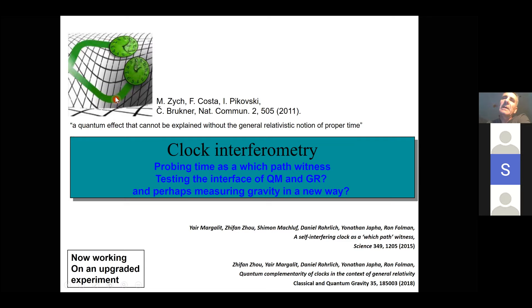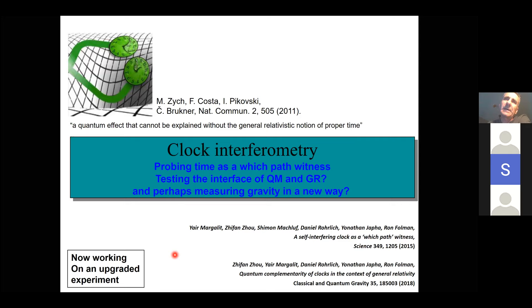In our proof-of-principle experiment, we were not sensitive enough with our clocks to really feel Earth's redshift, which is pretty small. So we used what we call a synthetic redshift — a physical simulation of the redshift — and saw the same effect. The last paper came out two years ago, but we're now working on an upgraded experiment closing loopholes from the previous one. For example, we'll use states that are non-magnetically sensitive — real clock states, a real microwave clock — and other improvements.